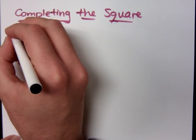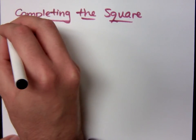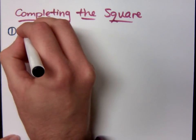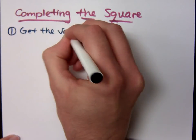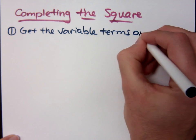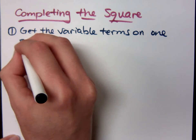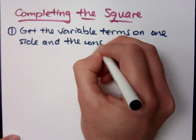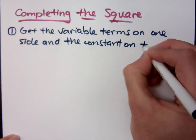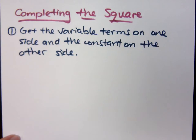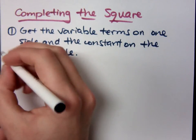To complete the square, there are some steps here, and they can be kind of annoying, but we just have to live with it. The first step is that you get the variable terms on one side and the constant on the other side. Basically, you are separating these — get your variables on one side, constants on the other. This is how you start to set up completing the square.